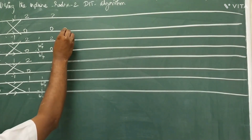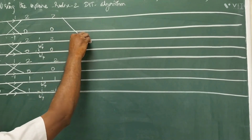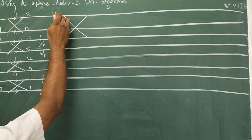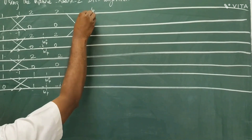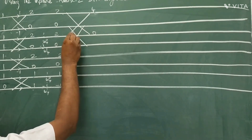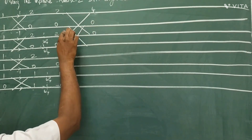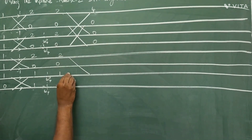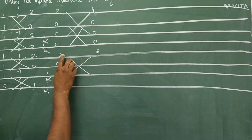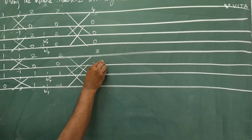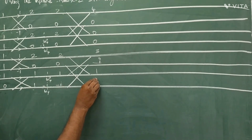In Stage 2, take alternate lines to draw the butterfly — one butterfly in the even line, another in the odd line. Computing: 2+2=4, 2-2=0; 0+0=0, 0-0=0; 2+1=3, 2-1=1; and 0+(-j)=-j, 0-(-j) gives a result with imaginary term. These are all the outputs of Stage 2.